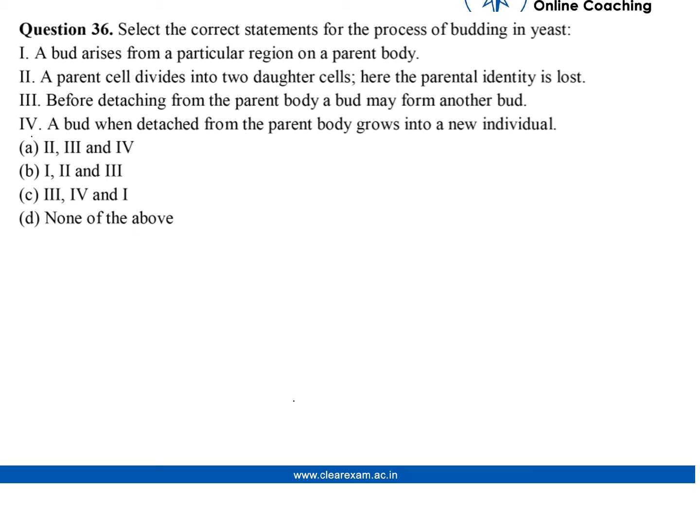We have to find out the correct process of budding. In each option, a bud arises from a particular region of a parent body. As we know, budding is a type of asexual reproduction in which new organisms are formed from a bud of an existing organism. A small bud is formed at a specific position on the parent cell.